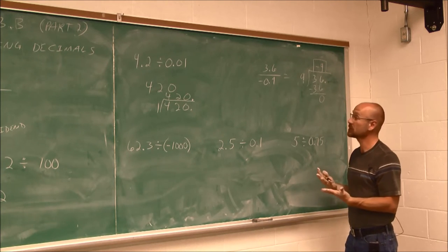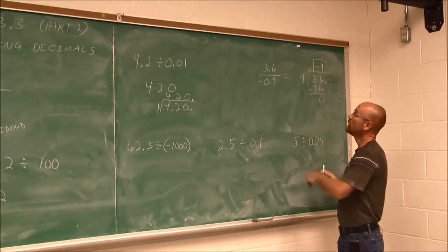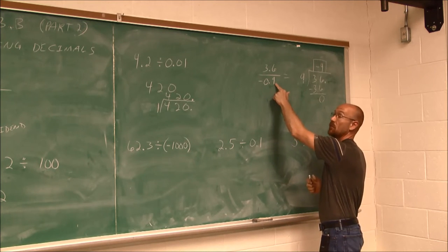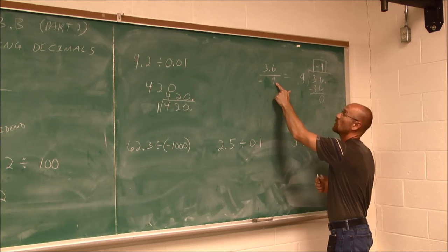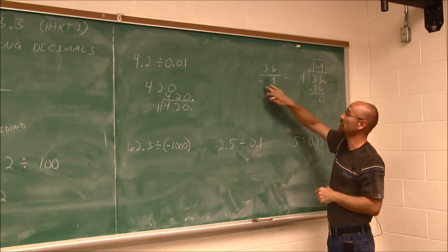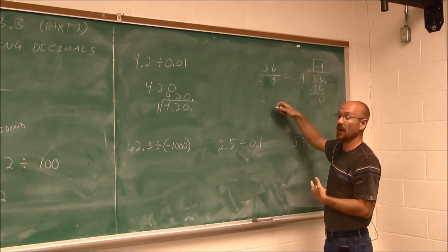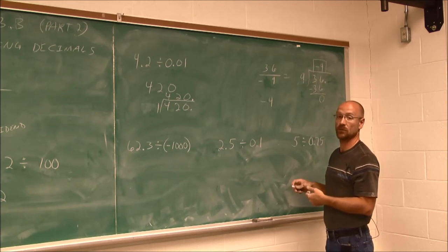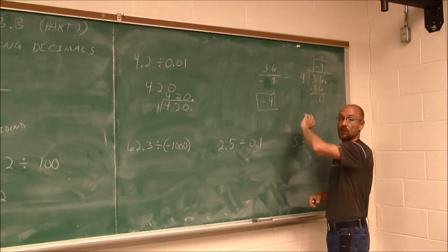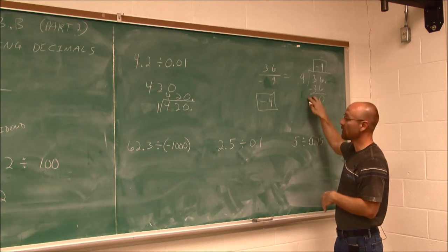A quicker way is to leave it in fraction form. Moving the decimal one spot in both numerator and denominator gives 36 divided by negative 9. We can assess the sign — it's negative — and 36 divided by 9 is 4, so the answer is negative 4, just as before. Using fraction form can help us spot common factors and simplify before doing long division.